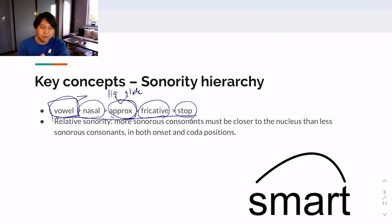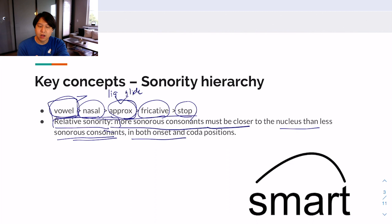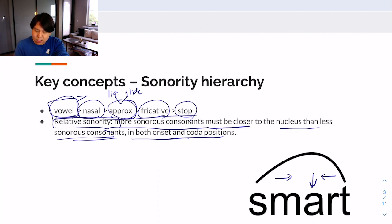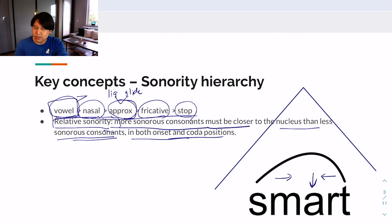An important concept is relative sonority: more sonorous consonants must be closer to the nucleus than less sonorous consonants, in both onset and coda positions. So when you think of a word like 'smart,' the vowel /a/ is the nucleus. The sonority of the whole word starts with a less sonorous consonant, moves toward higher sonority consonants, then peaks at the vowel, and then goes back down through more sonorous and then less sonorous consonants.